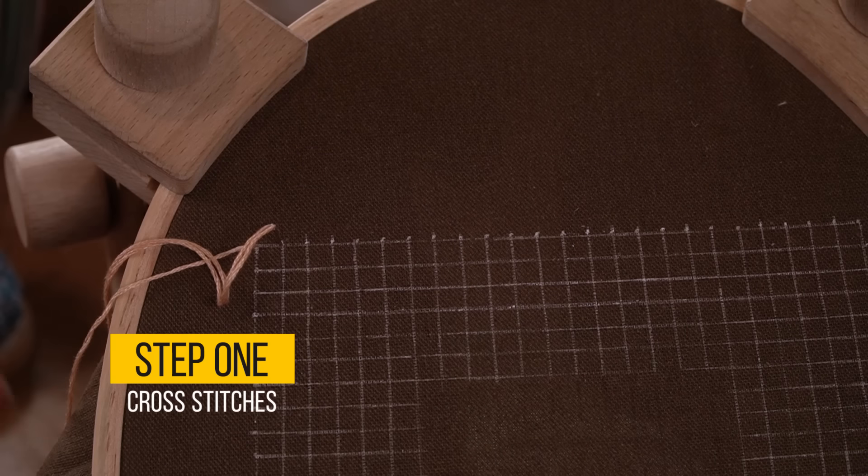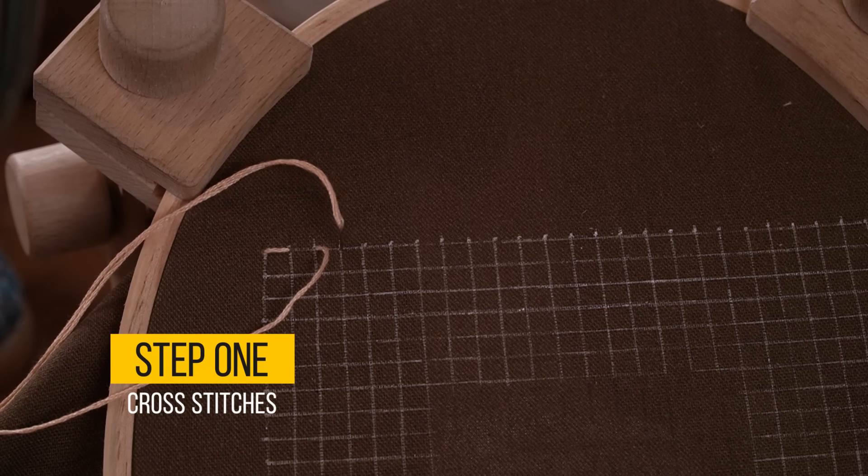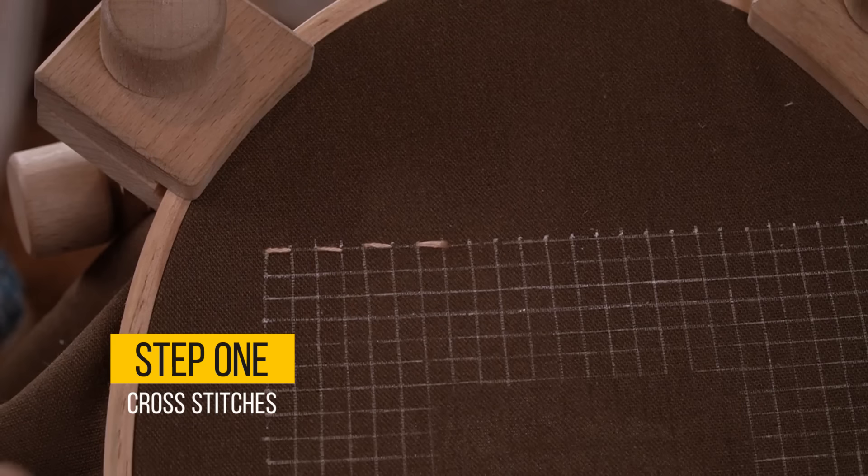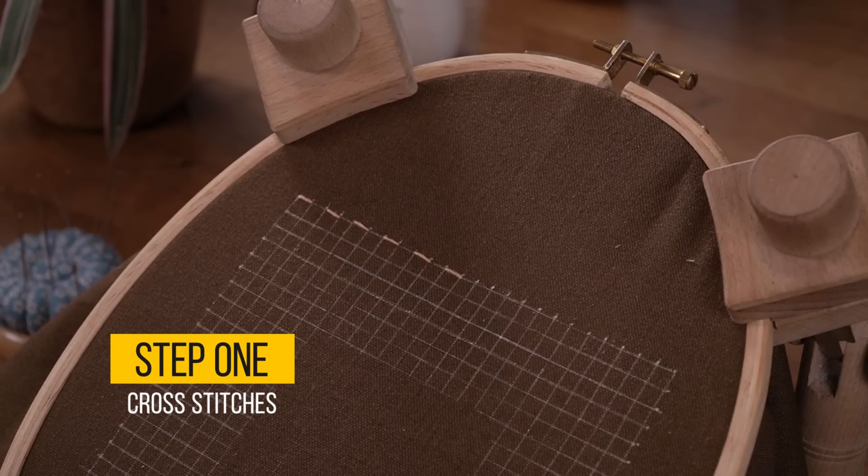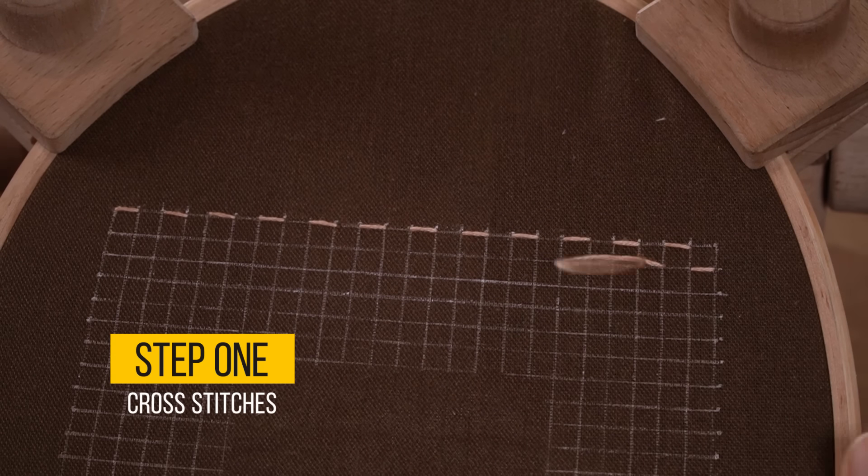Step 1: Cross Stitches. Using a simple running stitch, I'll create crosses on our fabric. Think of it as planting the seeds of our design, setting the stage for the beauty to come.